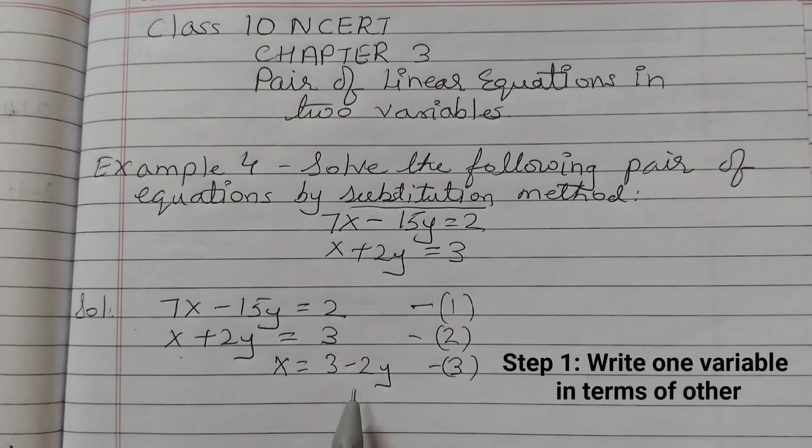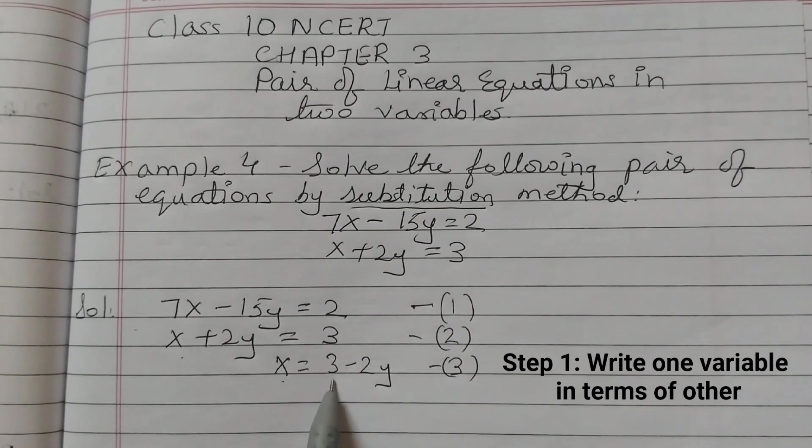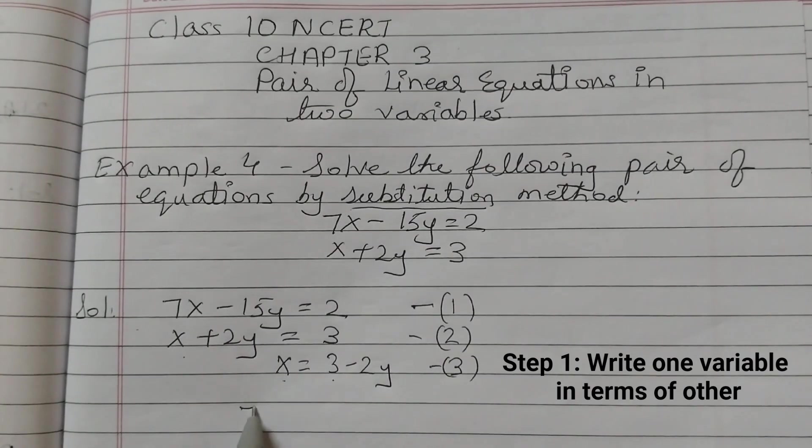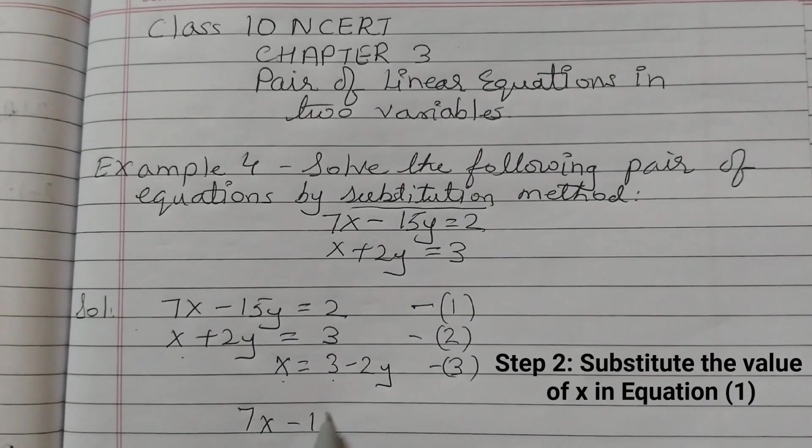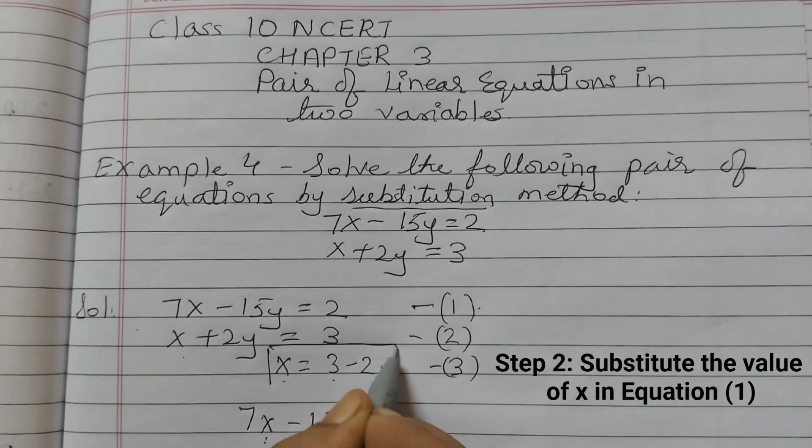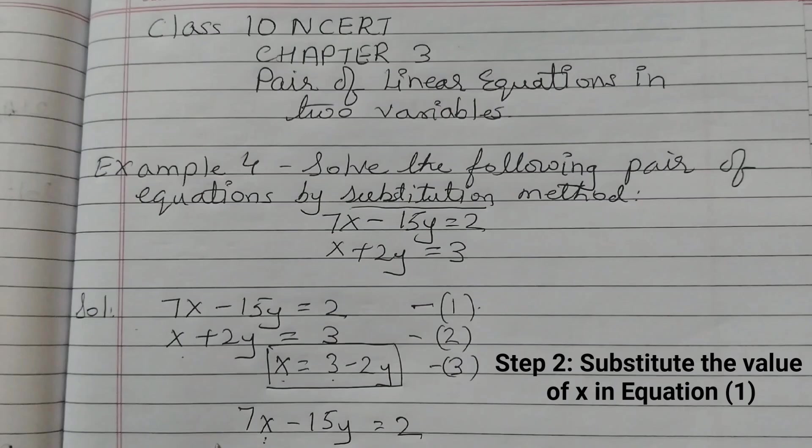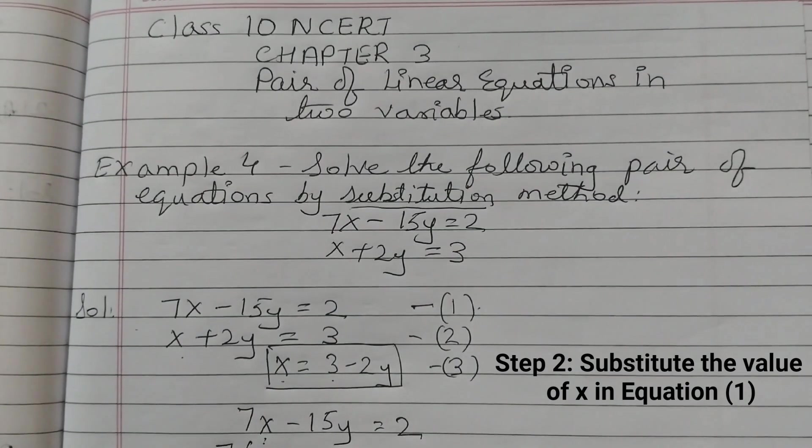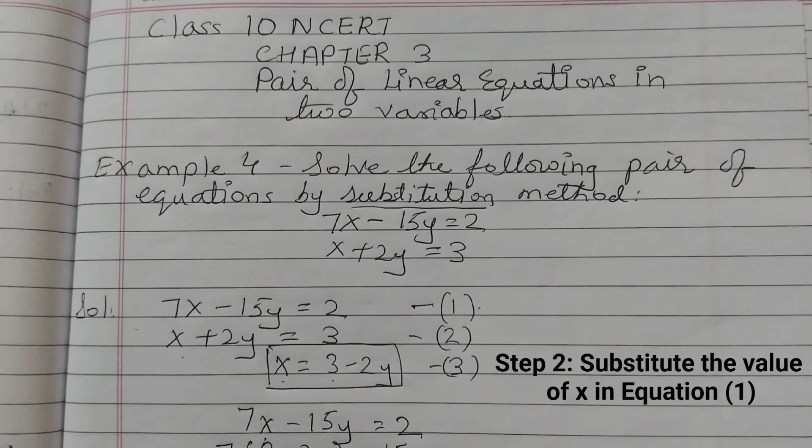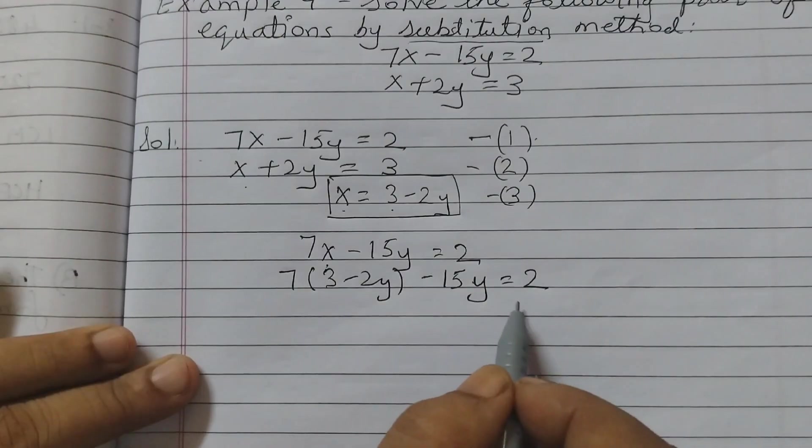Now this x value from equation 3, we are going to substitute into equation 1. So we will write 7x minus 15y equals 2. Now replace this x by 3 minus 2y. So 7 bracket opens, 3 minus 2y, minus 15y equals 2.